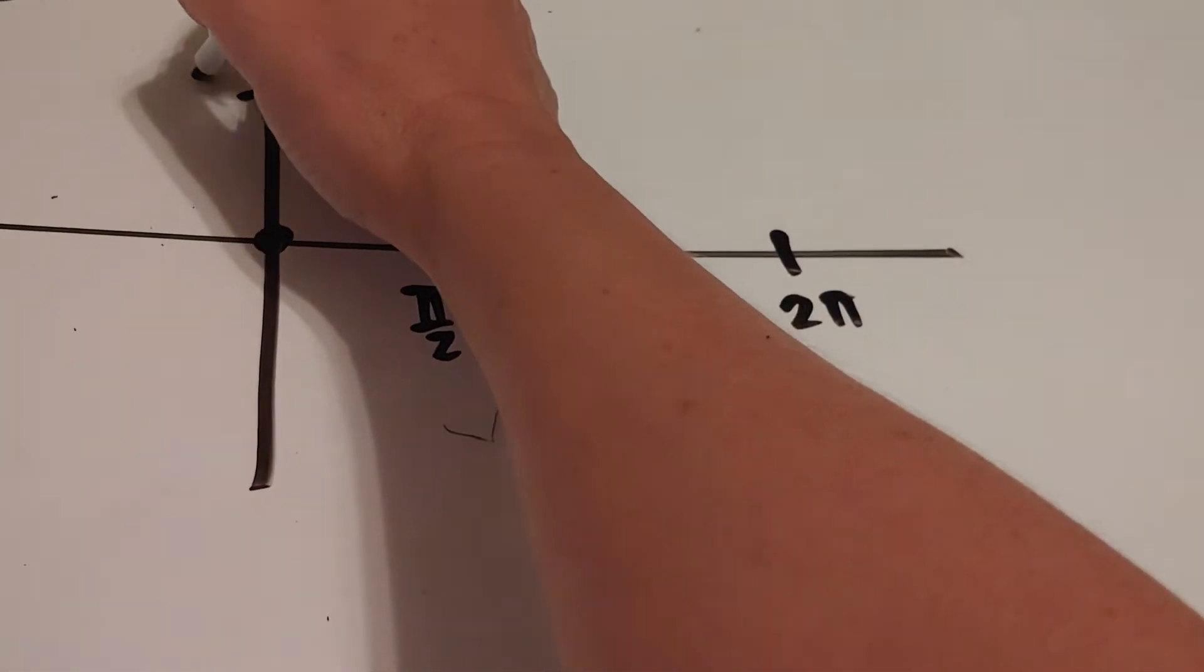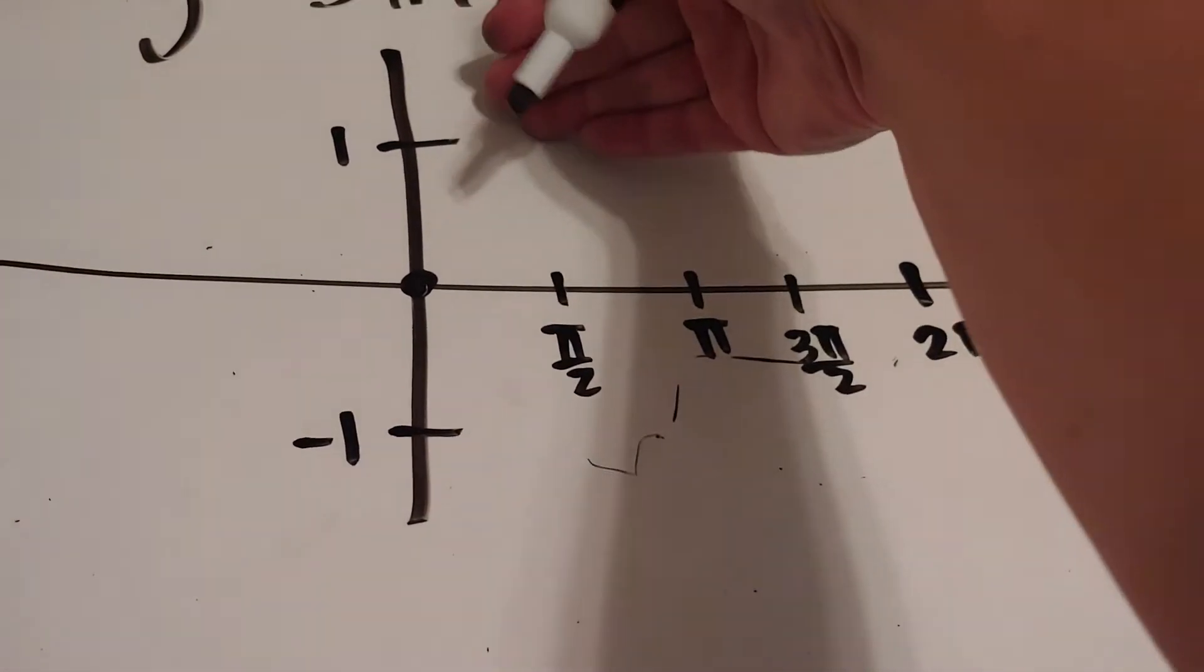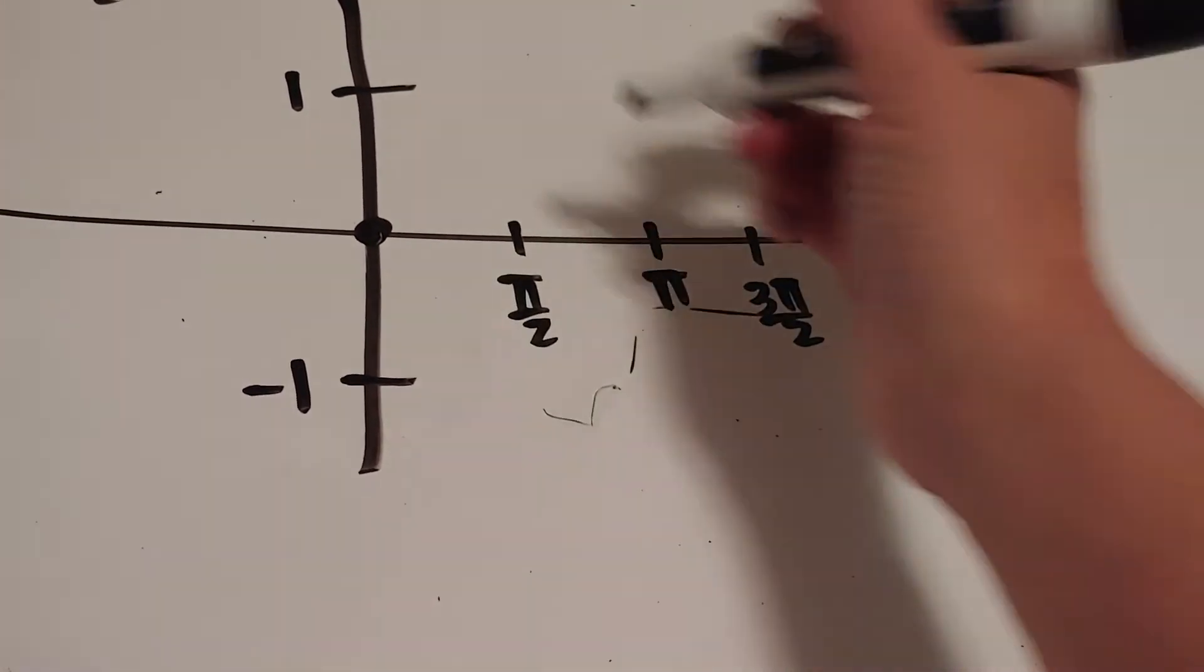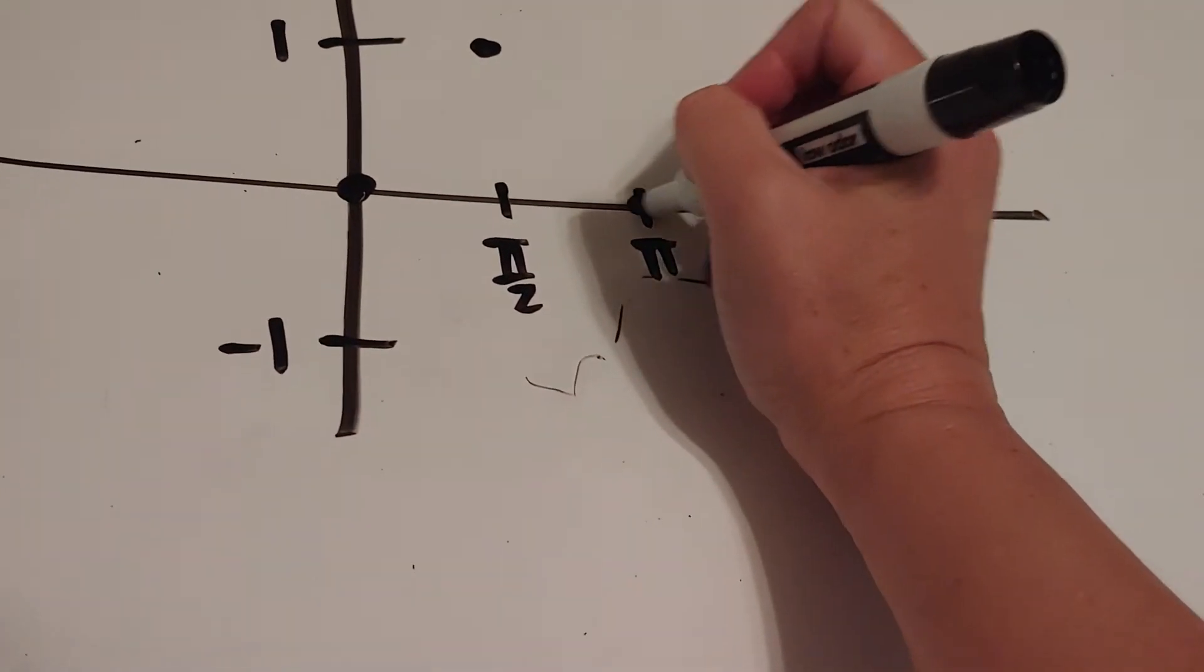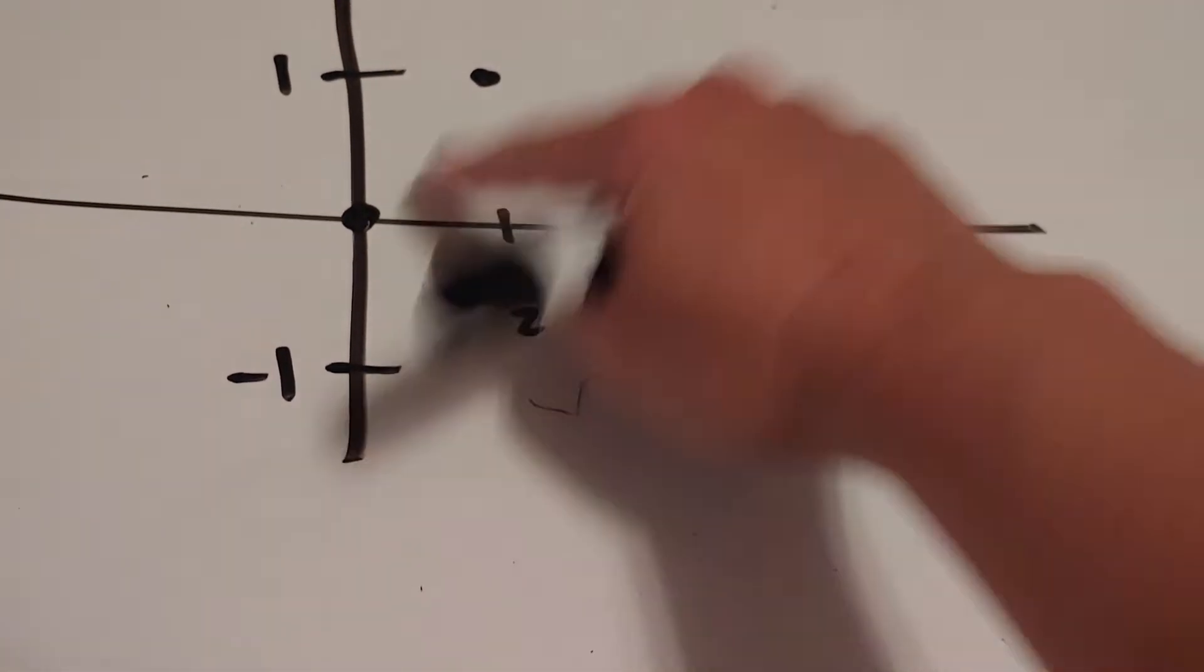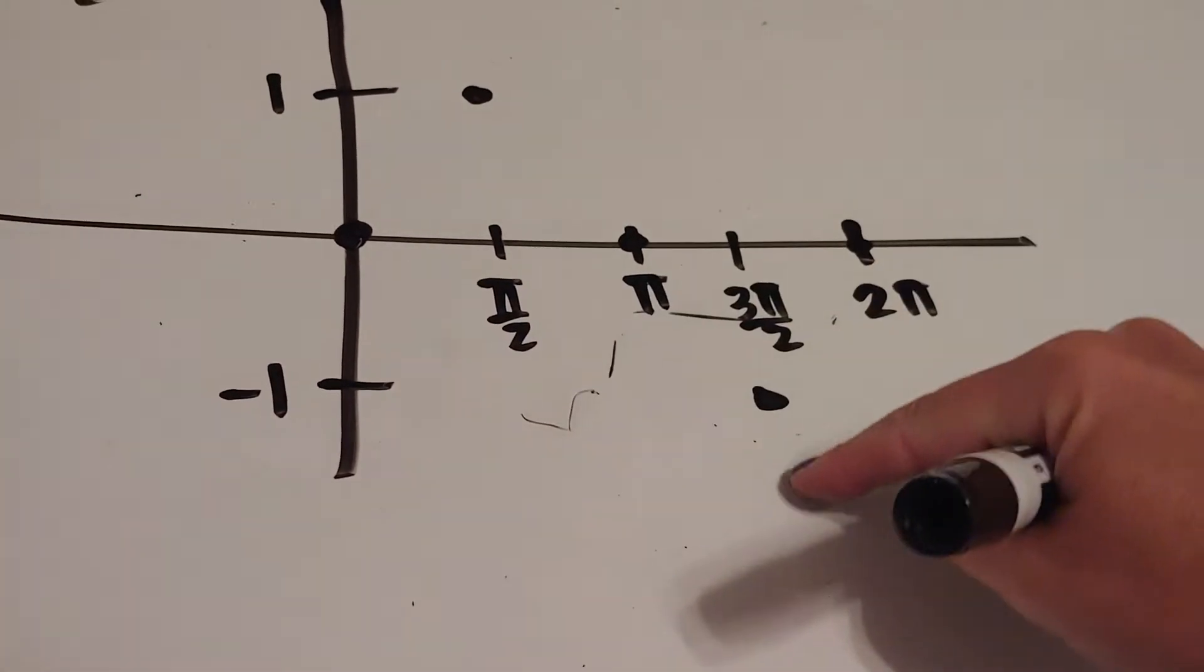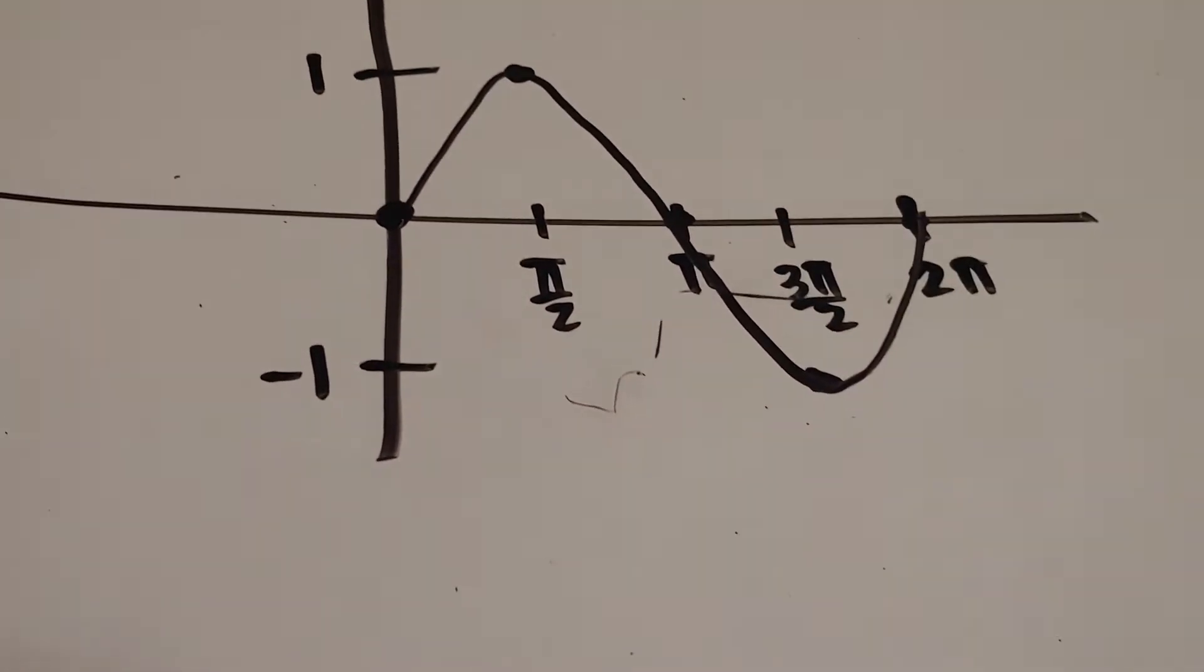Sine and cosine both have an amplitude of 1, so they'll only go as tall as positive 1 and as tall as negative 1. The sine graph looks like this: it goes 0, up, 0, down, 0. Connect the dots.